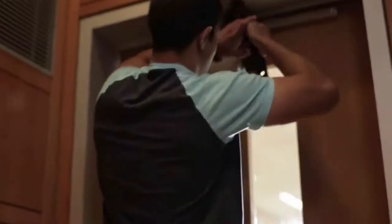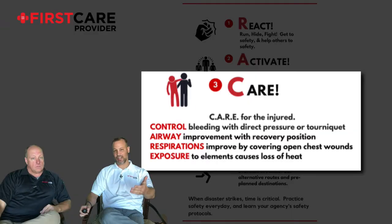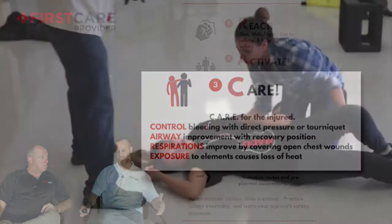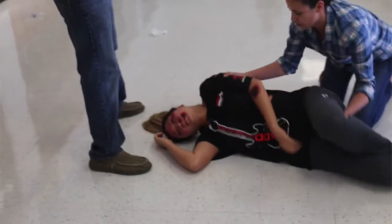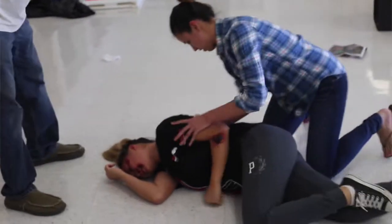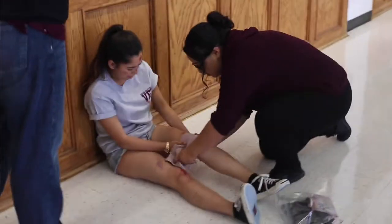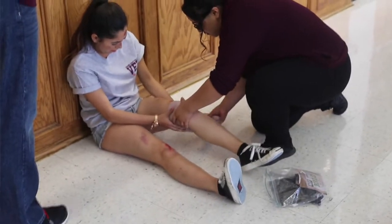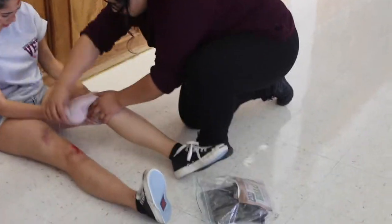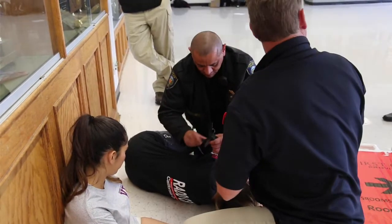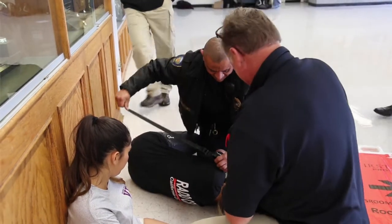And it goes into the next step, which is C — care for the injured. If somebody's hurt, there's only a certain number of things you can do in the time before EMS or first responders get there to help you. You need to care for them, and we'll go into that more in depth when we get to the care for injured section.